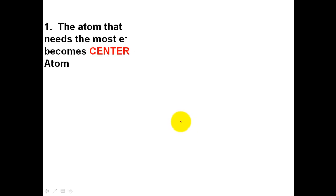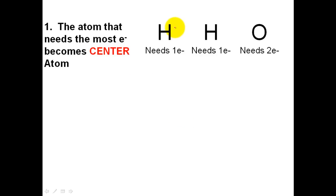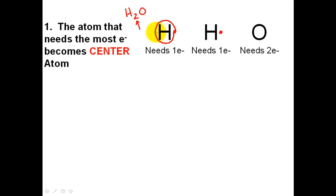Step number one is that the atom that needs the most electrons becomes the centerpiece in the very middle of my Lewis dot structure. As we look at our example H2O, hydrogen has one outer shell electron, but on the first energy level around any atom there are only two electrons that can exist there. So in order for hydrogen to have a full energy level, it only needs one more electron — I call it the exception to the octet rule, the duet rule. Oxygen follows the standard octet rule and is located in group six, which means it needs two more electrons to have a full outer shell.